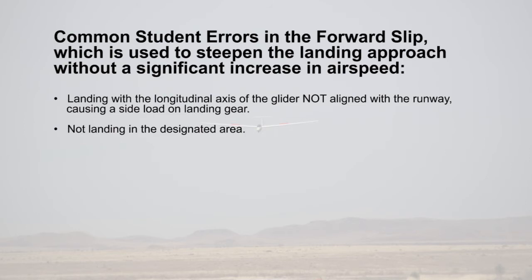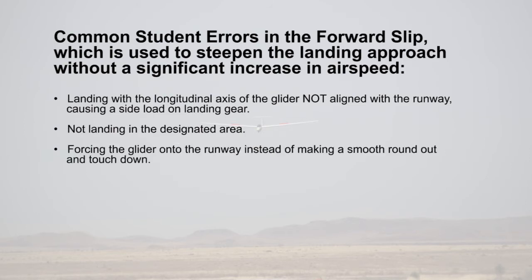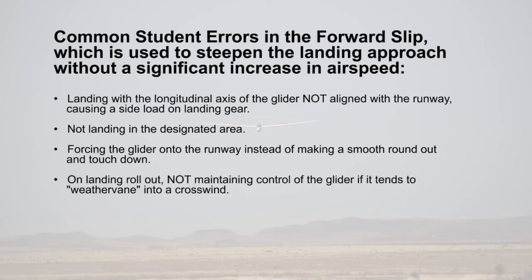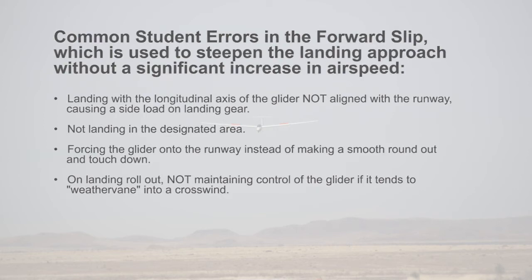Landing with the longitudinal axis of the glider not aligned with the runway, causing a side load on the landing gear. Not landing in the designated area. Forcing the glider onto the runway instead of making a smooth round out and touchdown. On landing rollout, not maintaining control of the glider if it tends to weathervane into a crosswind.